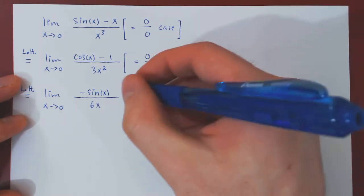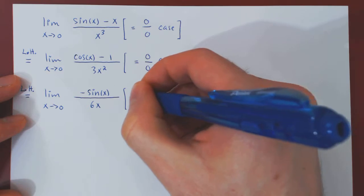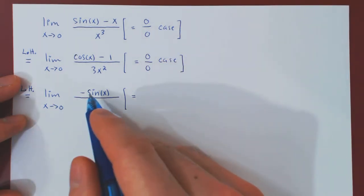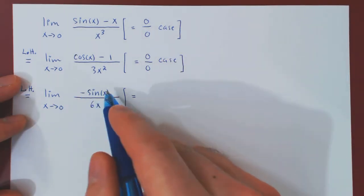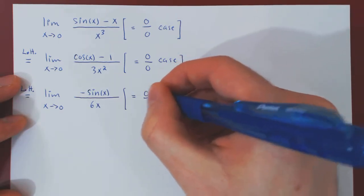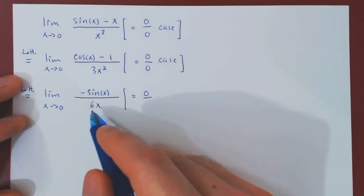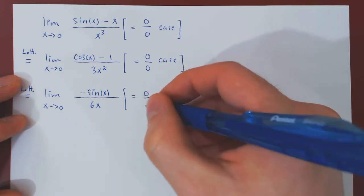Let's see what kind of case we're dealing with. As x goes to 0, sin(x) will approach sin(0), which is 0, so negative 0 is 0, over, as x goes to 0, 6x also shrinks to 0.